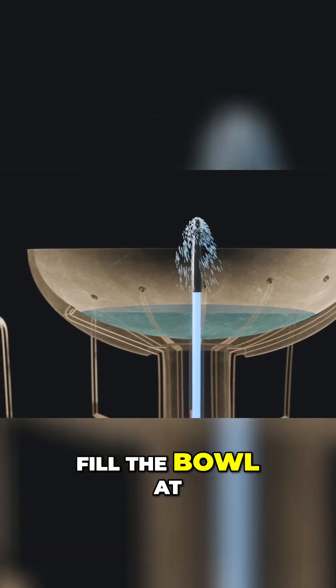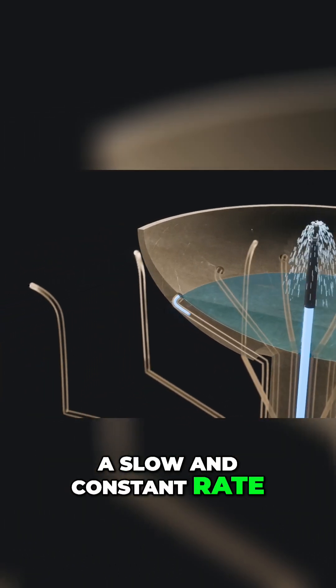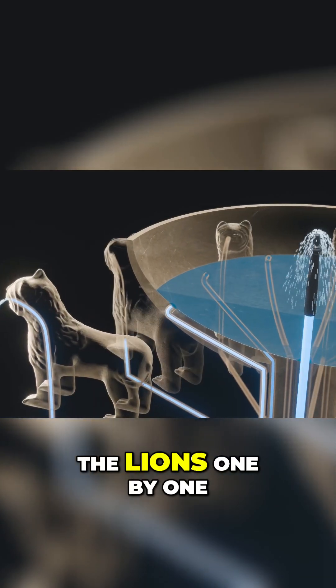A central pipe would fill the bowl at a slow and constant rate, causing the water level to rise and activate the lions one by one.